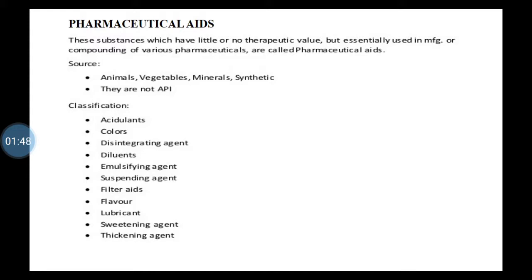In every category — like pharmaceutical aids — you will write down 14 drugs, then definition and classification. After that, give the heading beeswax, then synonym, then biological source, then chemical constituents and uses, because the question is mainly asked on these parameters only.